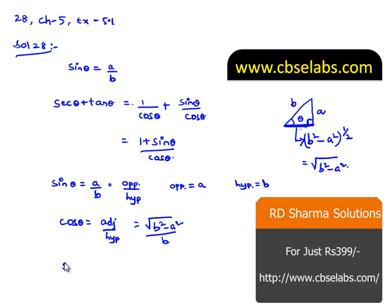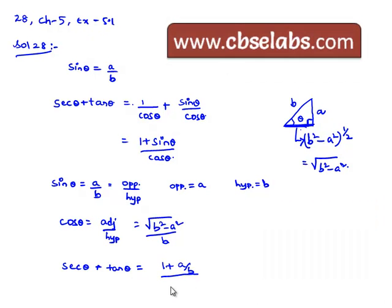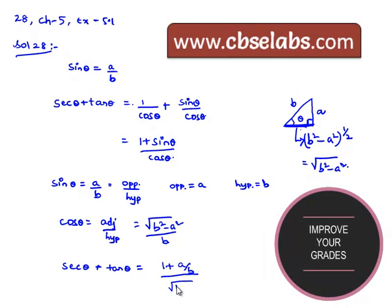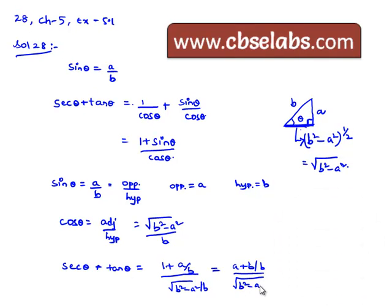Let us substitute into the secant theta plus tan theta expression. That is equal to 1 plus sin theta, which is a by b, all divided by cos theta, which is root of b squared minus a squared by b. Taking LCM as b in the numerator, we get a plus b by b, divided by root of b squared minus a squared by b. This simplifies to a plus b divided by root of b squared minus a squared, which is the solution.